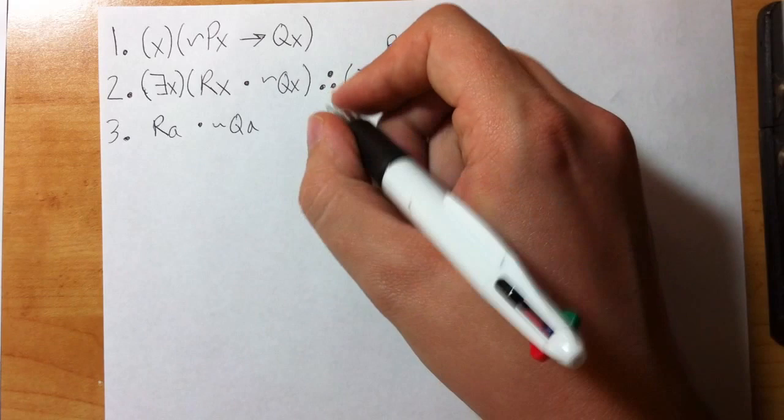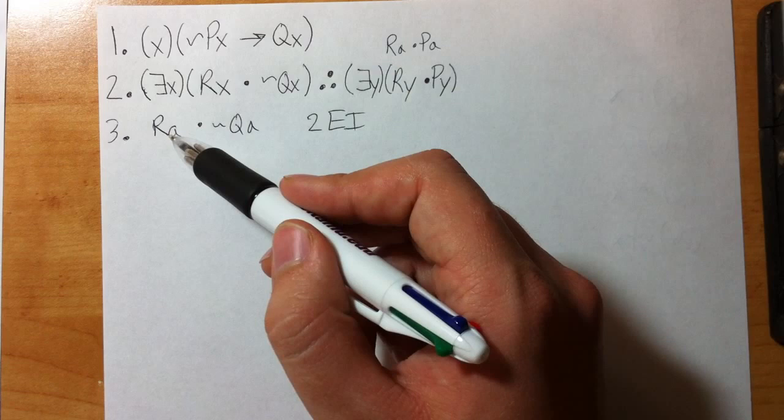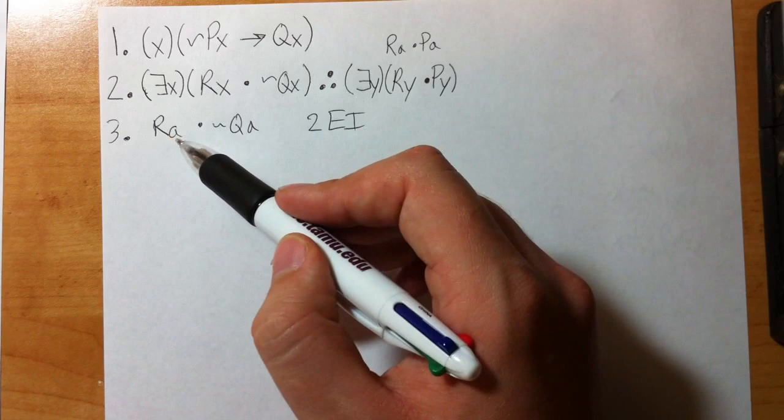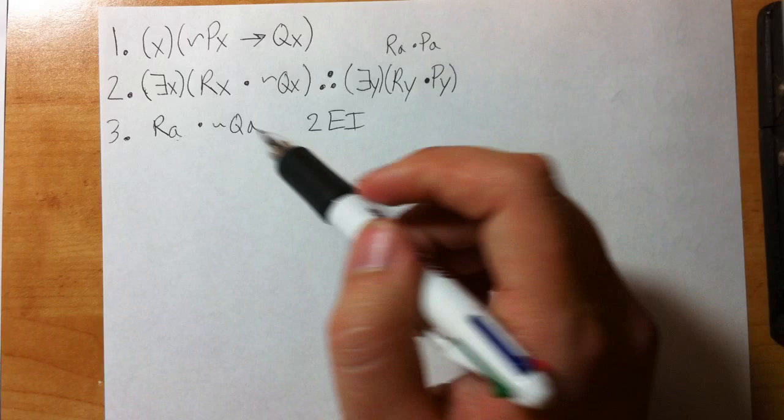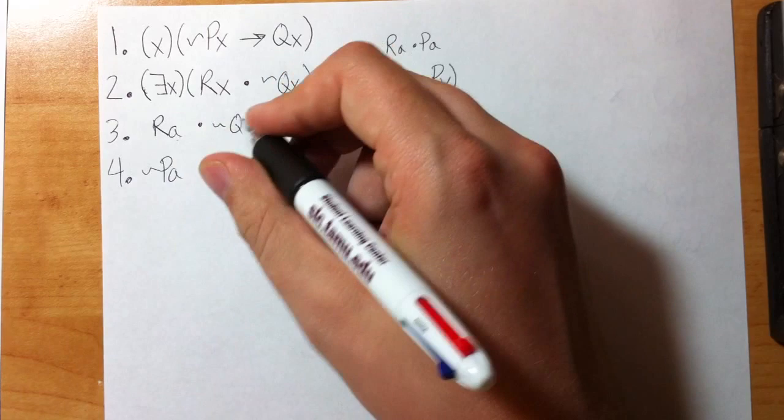Ask yourselves the two questions. Does a appear anywhere else in the proof before it? If the answer is yes, don't just skip over this—really ask yourselves the question, has this letter been used already? If the answer is no, you're good. If the answer is yes, pick a different letter. So a has not been used, so we're good there. Does a appear in the conclusion? No, it does not. So we're good with EI.